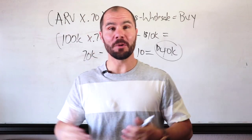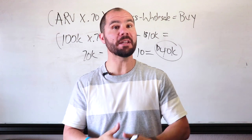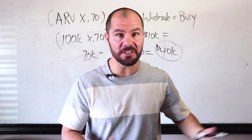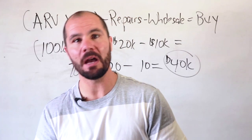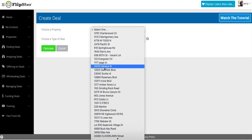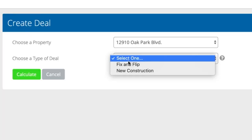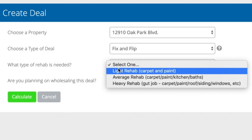What if there was a way to do all of this math using a software tool that already calculated the ARV for that area, already calculated the repairs, ran all of the numbers, and instantly gave you a buy price? Let's jump on the computer right now. Here we are in my instant deal analyzer. Once you log in, you're going to click 'add new deal,' then select the property you want to analyze, and choose fix and flip.